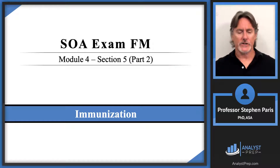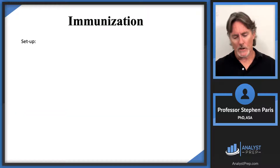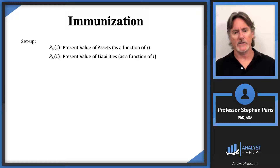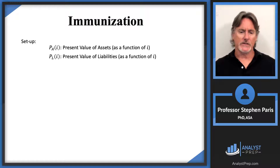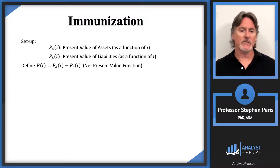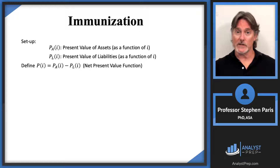In this video we're going to talk about immunization, which falls under the concept of asset-liability management. In the previous learning video we talked about exact matching or dedication — that was one way to manage your assets and liabilities. This is a second way: immunization. Remember, you have assets and liabilities, so you have a present value function of the assets and a present value function of the liabilities. I want to think of both of those present values as functions of the interest rate, then define the net present value function as the present value of the assets minus the present value of the liabilities.